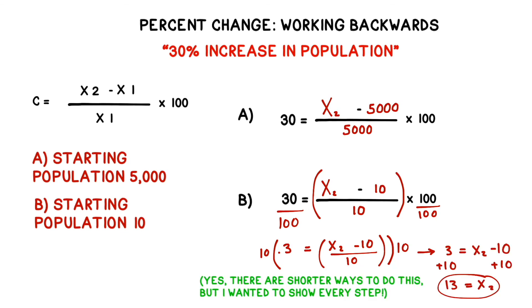If you do out the math, you'll find that increasing a population of 10 by 30 percent results in 13 organisms at the end. If you start with a population of 5,000, if you increase by 30 percent, you'll end up with 6,500 organisms.